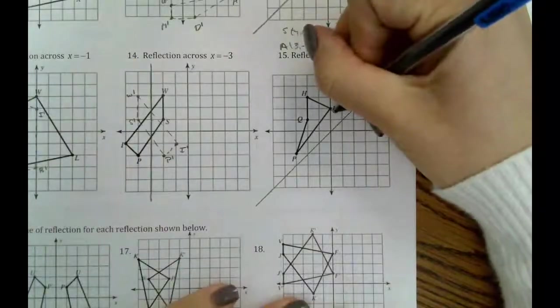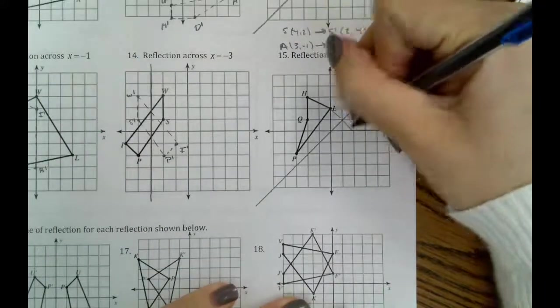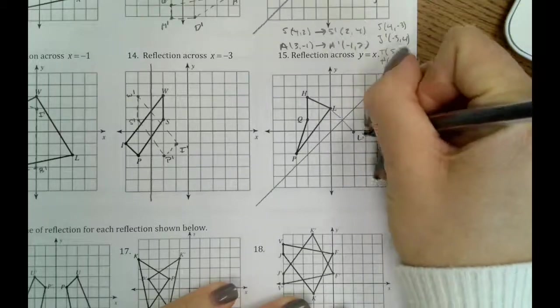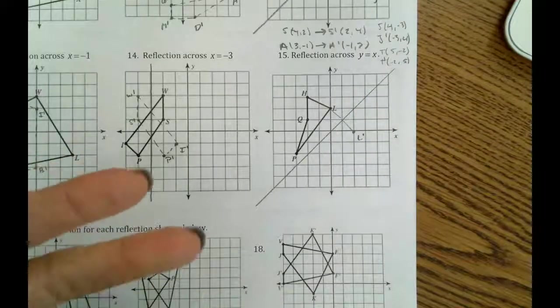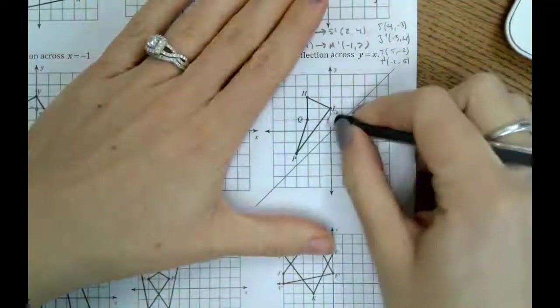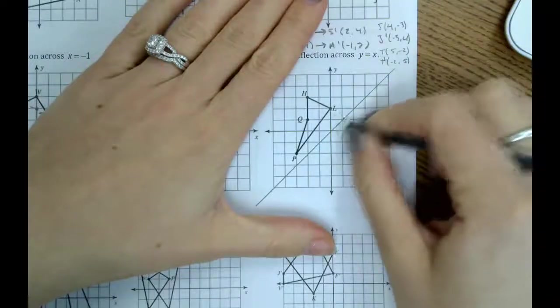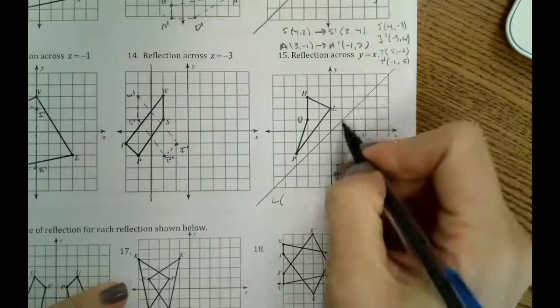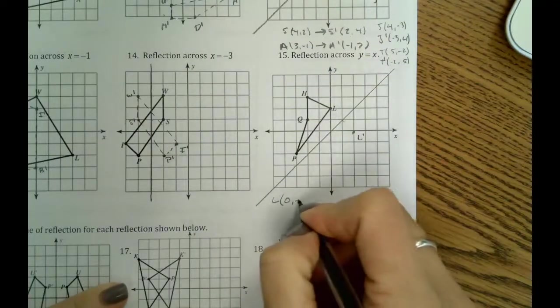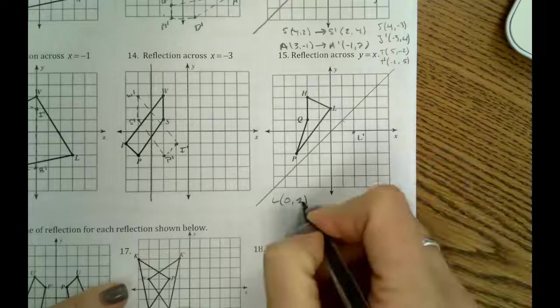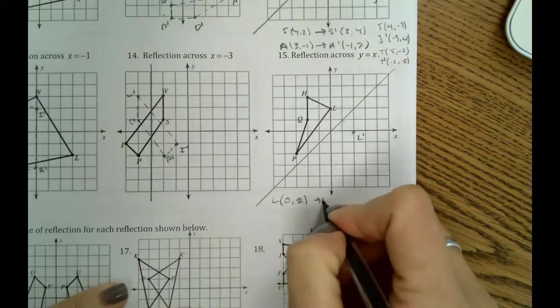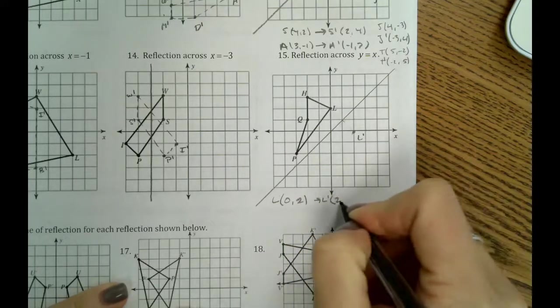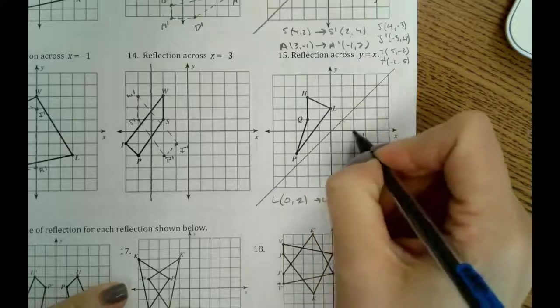Okay, so obviously l, that would be easy to count diagonally, right? And our new l would be over here. But that's not always going to work for all of our points. So if we look at our points, l is at the point 0, positive 2. So our new l is going to be at 2, 0, and there it is.